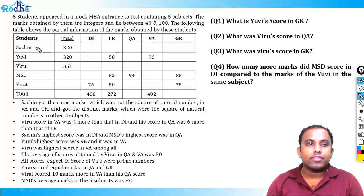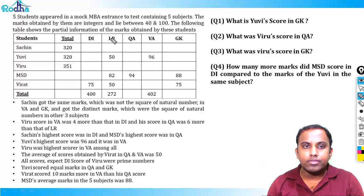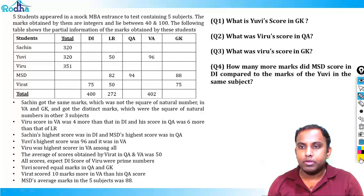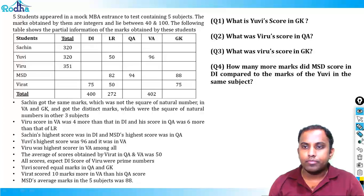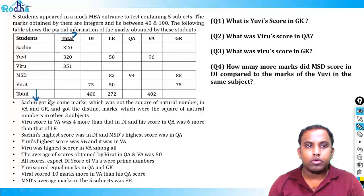The students are Sachin, UV, Viru, MSD, and Virat — all cricketers' names. The table has a total column representing the row totals for each student, and a total row representing the column totals for each subject.